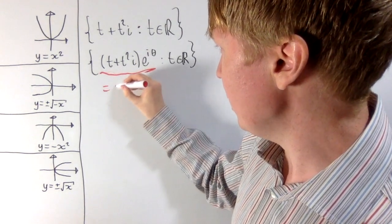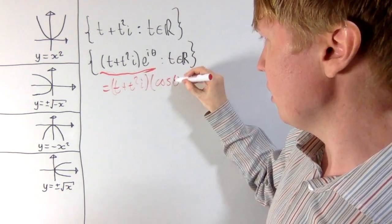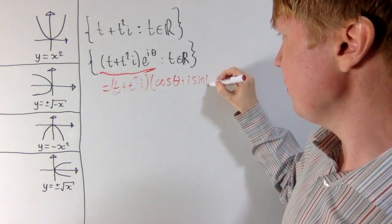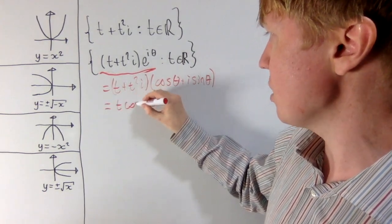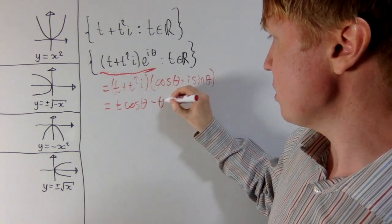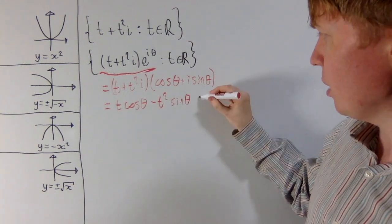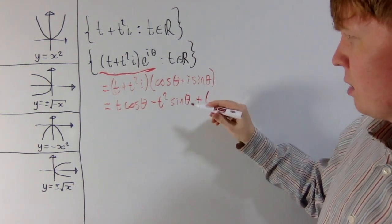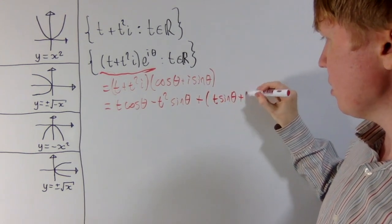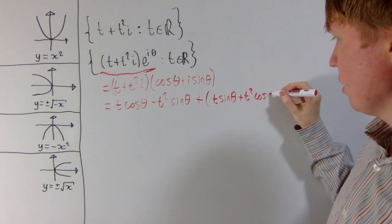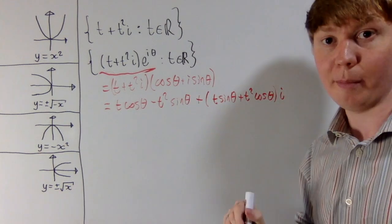Expanding, we get t plus t squared i, multiplied by cos theta plus i sin theta. Taking real and imaginary parts: the real part — our new x coordinate — is t cos theta minus t squared sin theta. For our imaginary parts, the new y coordinate is t sin theta plus t squared cos theta, all multiplied by i.